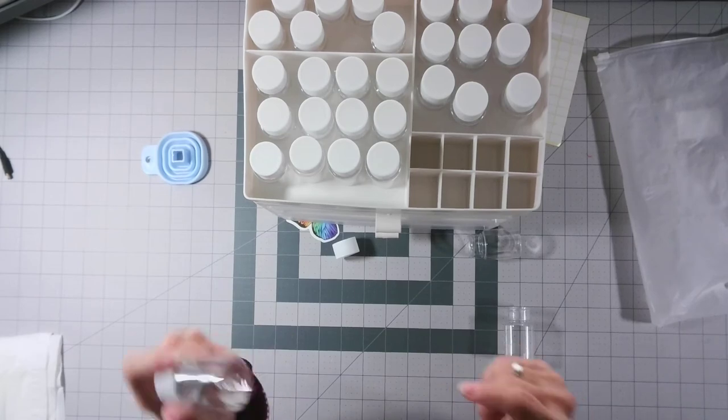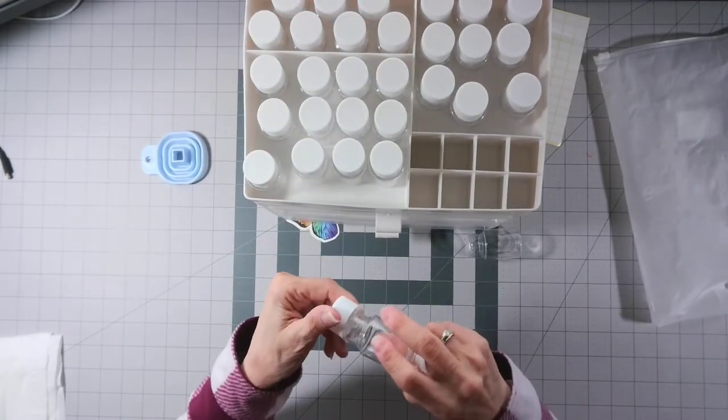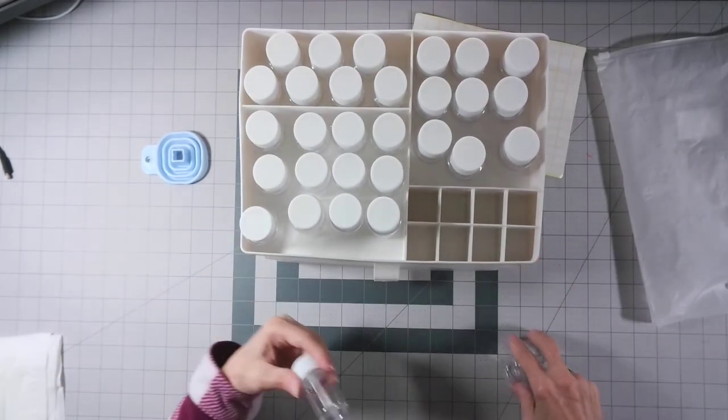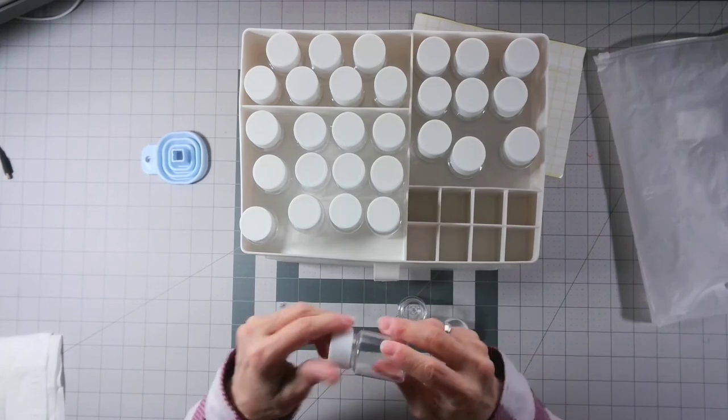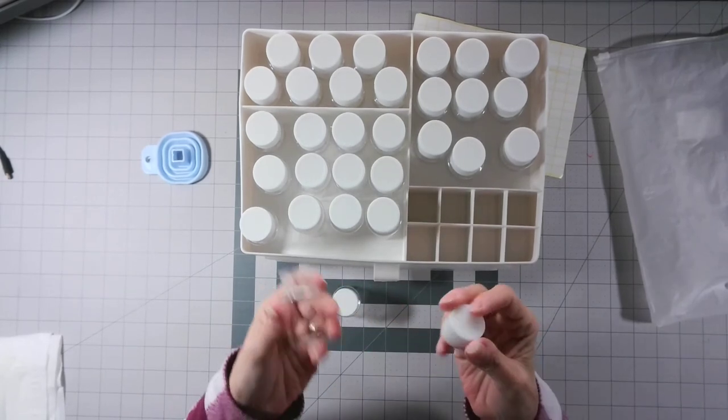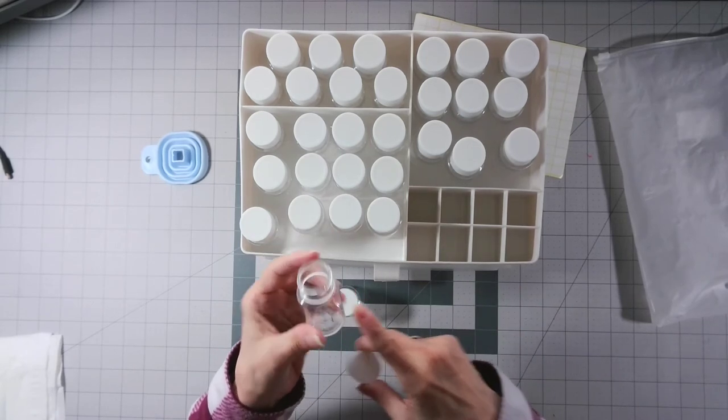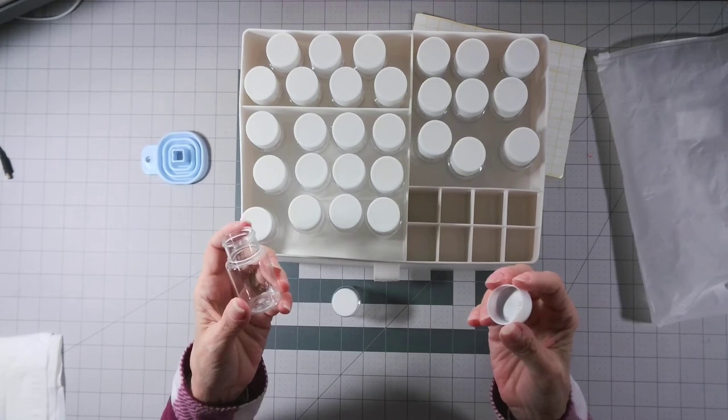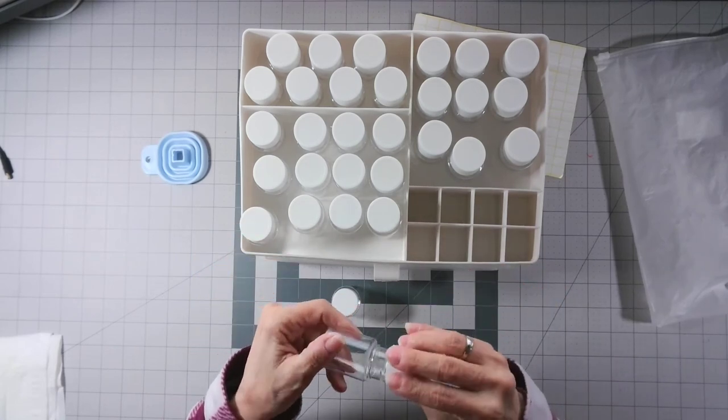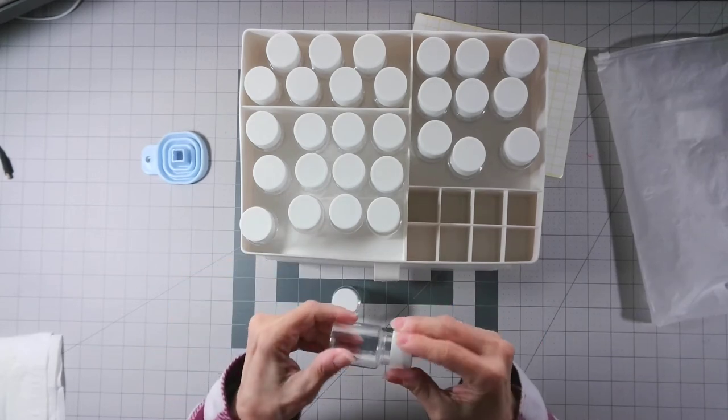Now, if you have one of those dollar store photo boxes that everybody uses to store their leftover diamond painting drills in, these bottles would fit perfect in one of those photo boxes. So, you don't have to buy, you know, this, this set here. Because, I'm always looking for budget friendly stuff. You know, so, you could buy two or three sets of these bottles. And, you know, if you've got a kit that has, say, like, 56 colors in it, you'd only need two sets of these. Because, they come $30 to a pack for $10.